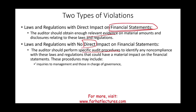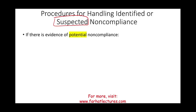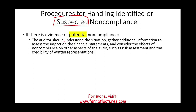To investigate indirect impact, the auditor will inquire with management and those charged with governance, examine any correspondence or letters between the company and regulatory agencies, and read the minutes of the board. If we suspect potential non-compliance, we do not immediately report to a government or regulatory agency. We must do more work: gather additional information to assess the impact on the financial statements, and consider the non-compliance in the context of risk assessment and the credibility of written representations.